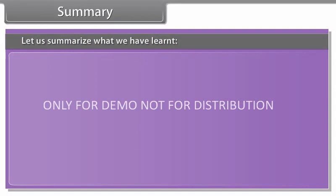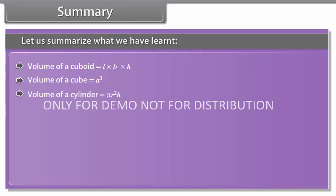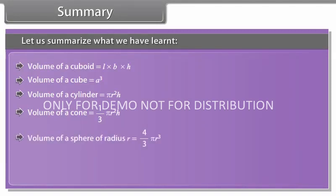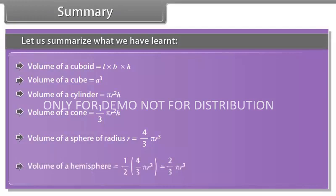Let us summarise what we have learnt. The volume of a cuboid is L × B × H. The volume of a cube is A³. The volume of a cylinder is πr²h. The volume of a cone is (1/3)πr²h. The volume of a sphere of radius r is (4/3)πr³. The volume of a hemisphere is (1/2) × (4/3)πr³, which equals (2/3)πr³.